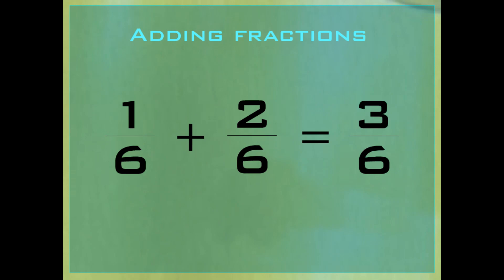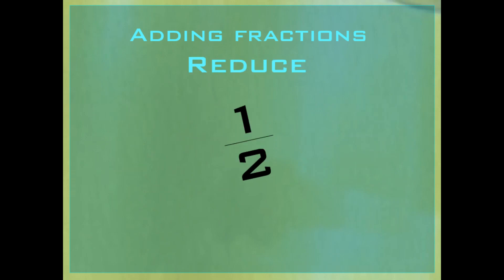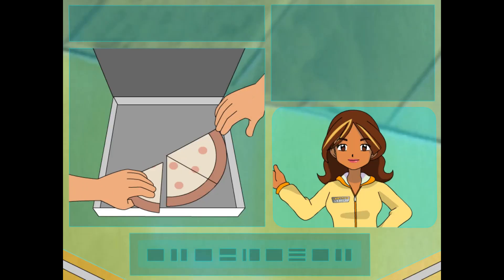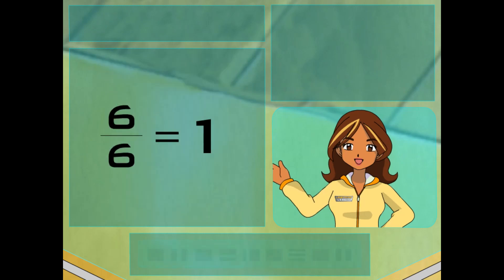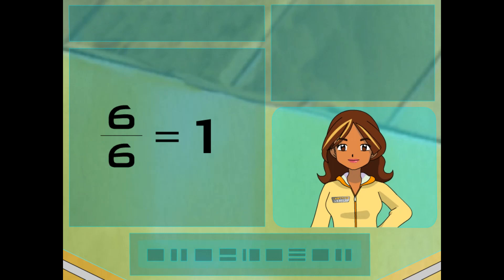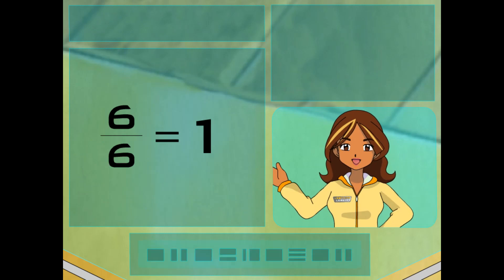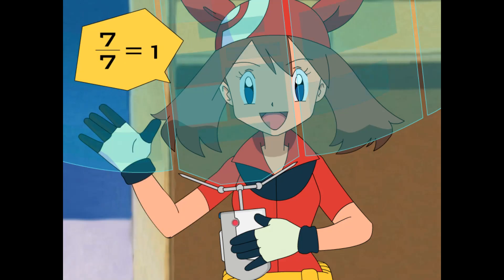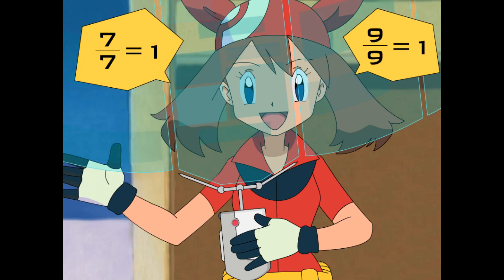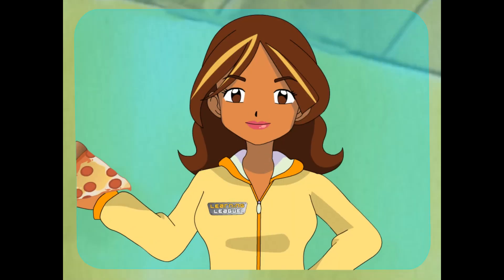So you go one-sixth plus two-sixths equals three-sixths. That's right. And then you can also reduce three-sixths to one-half. And here's proof. Half of the pizza has been eaten. Make that all the pizza has been eaten, which means six-sixths of the pizza is gone. Or one whole pizza is out of here. Because whenever the numerator and denominator are the same, they're equal to one. So, like seven-sevenths equals one and nine-ninths equals one? You got it.